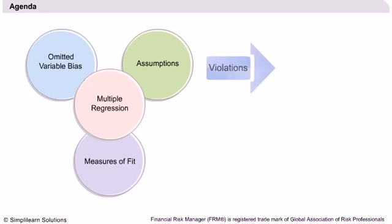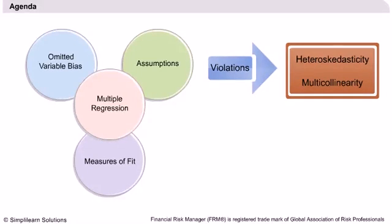Agenda: We'll begin by learning about the effects of omitting variables that should have been included when predicting the dependent variable. We will then look at the various assumptions in multiple regression, determine goodness of fit through the coefficient of determination and adjusted R-squared, and finally examine a major source of error in multiple regression: multicollinearity.